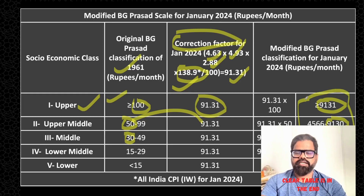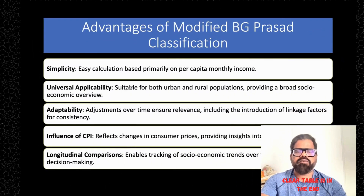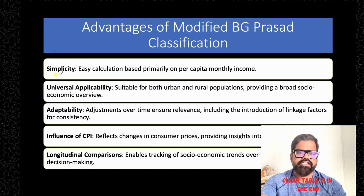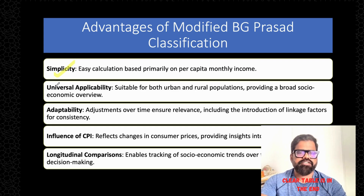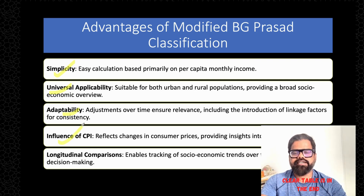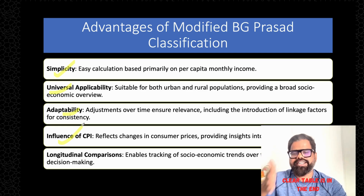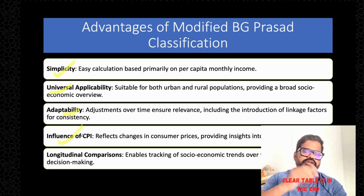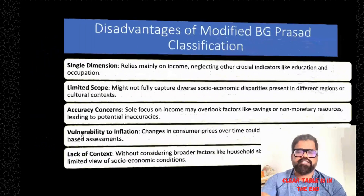There are certain advantages of modified BJ Prasad classification. It is very simple — per capita monthly income is easy to calculate (total family income divided by total family members). It can be applied to both rural and urban populations. It is very adaptable because knowing the linkage factors you can calculate at any time. It tracks economic fluctuations through the Consumer Price Index and allows longitudinal comparison and identification of socioeconomic trends.